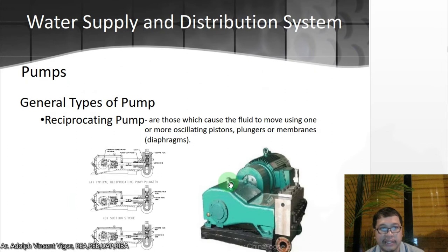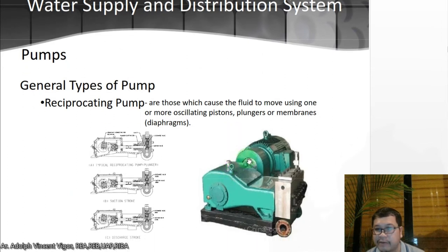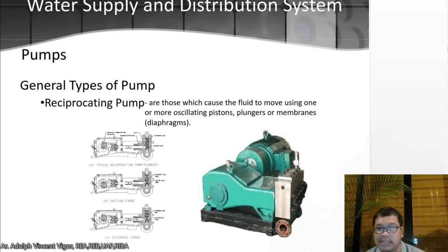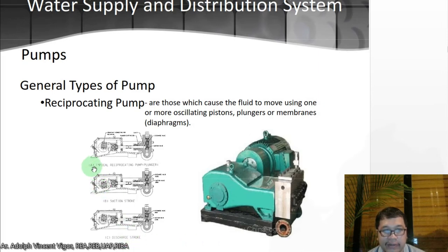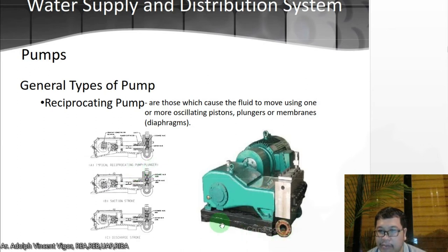This is a sample of a reciprocating pump. Reciprocating pumps are those which cause the fluid to move using one or more oscillating pistons, plungers, or membranes or diaphragms. This is the diagram of a typical reciprocating pump — just remember what it looks like. We don't need to get into the details, as long as you have a general idea.